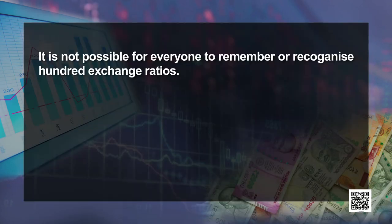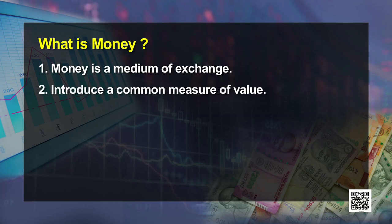What happened was it was very difficult to measure the value of a commodity in terms of another commodity. Let's suppose there are 10 commodities. Now every commodity can be measured in each other's terms, so we will have 100 exchange ratios. It is not possible for everybody to remember or recognize 100 exchange ratios. So we had to introduce a common measure of value so that every item can be exchanged for that one common measure of value — that was money.